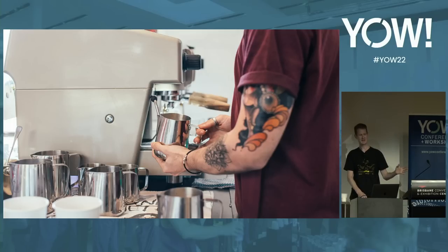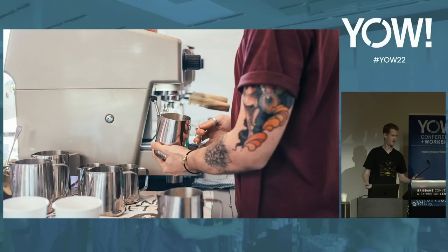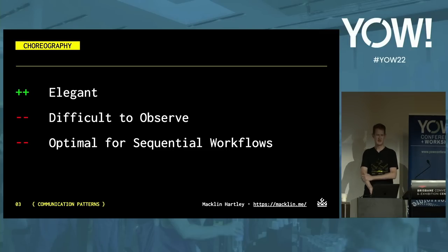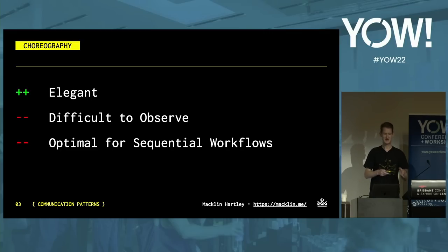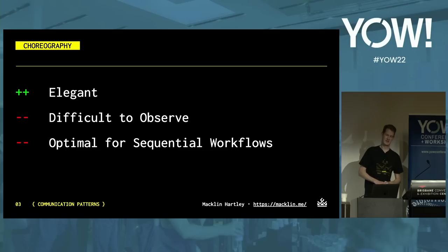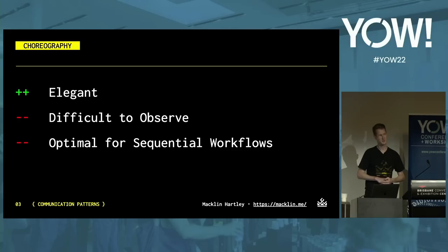With choreography, we may have to ask each of the participants in a workflow to understand where we're up to. Choreography is elegant in the sense that a dance routine is elegant — each person only has to look left for their cues. Each participant in a choreographed event-driven architecture only consumes the events they care about and produces other events that become cues for the next participant. The downsides might be that it's difficult to observe. If I want to know where this workflow is up to, I may need to talk to each of the participants. There's no central place to look for progress.